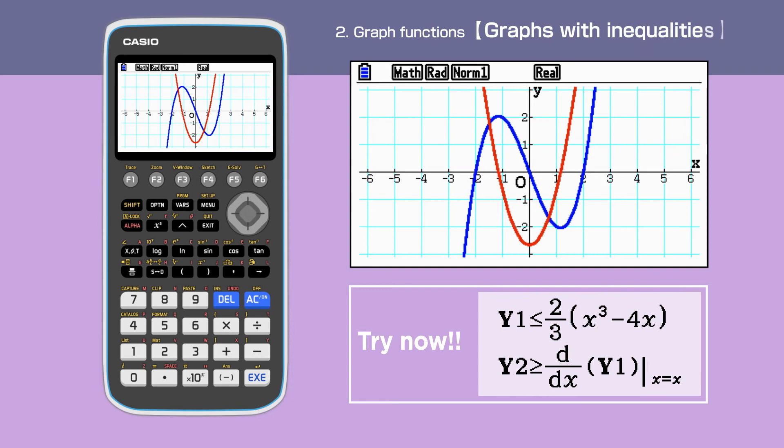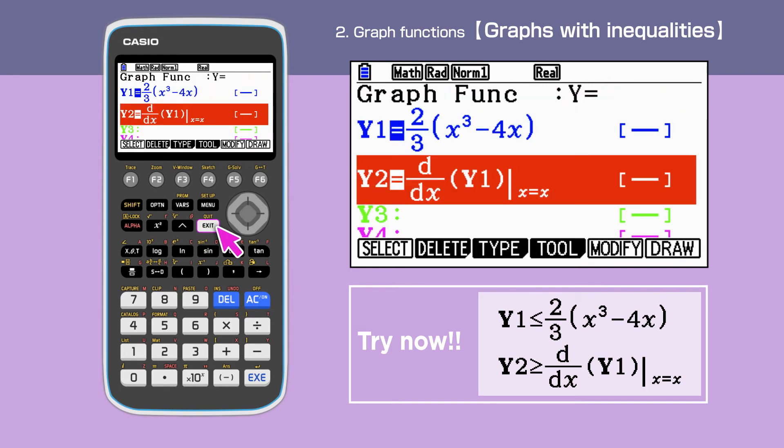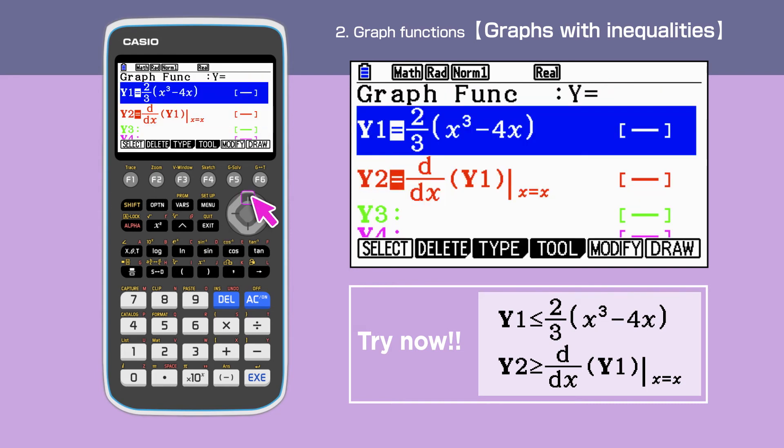Lastly, we are drawing graphs with inequalities. Go back to the graph function screen by pressing exit. Highlight the y1 function. Press F3 to display the graph type command.